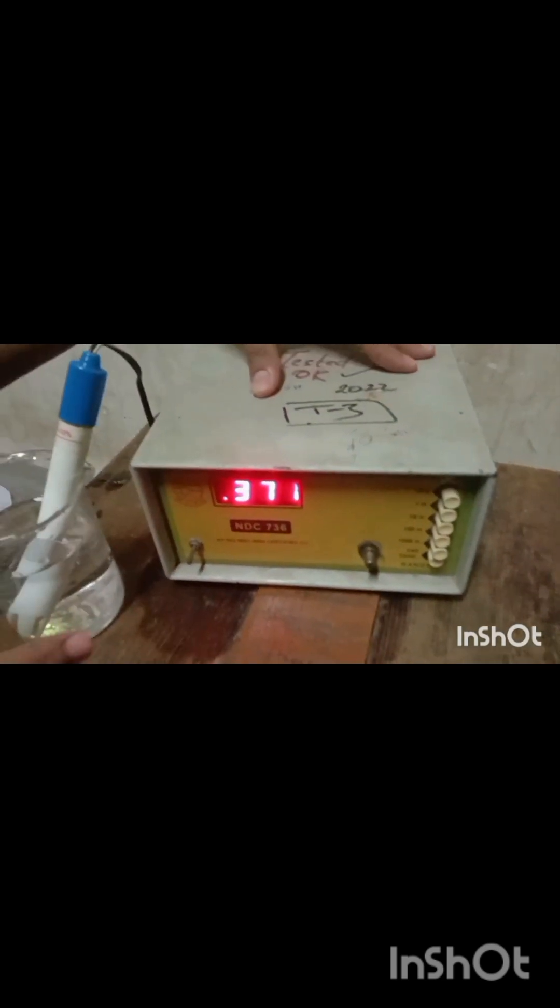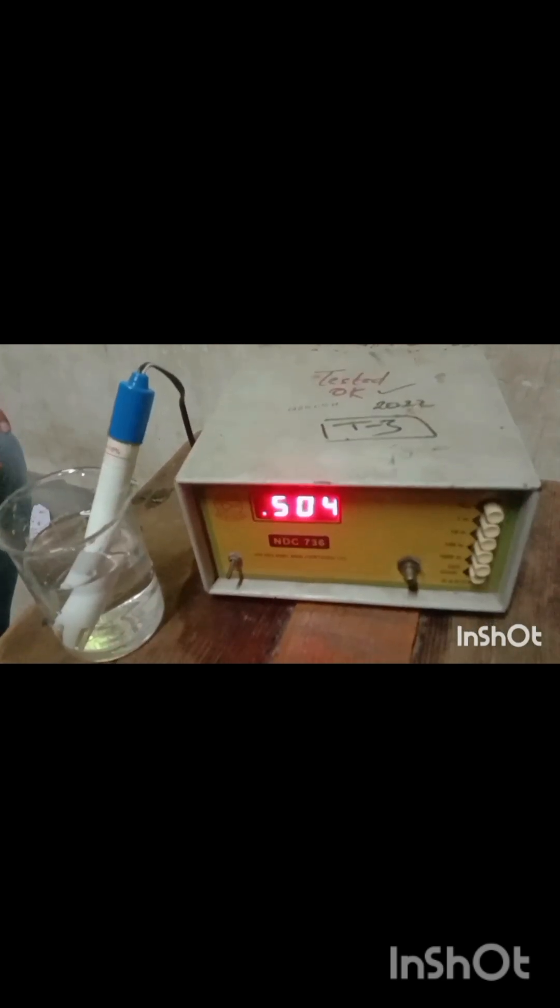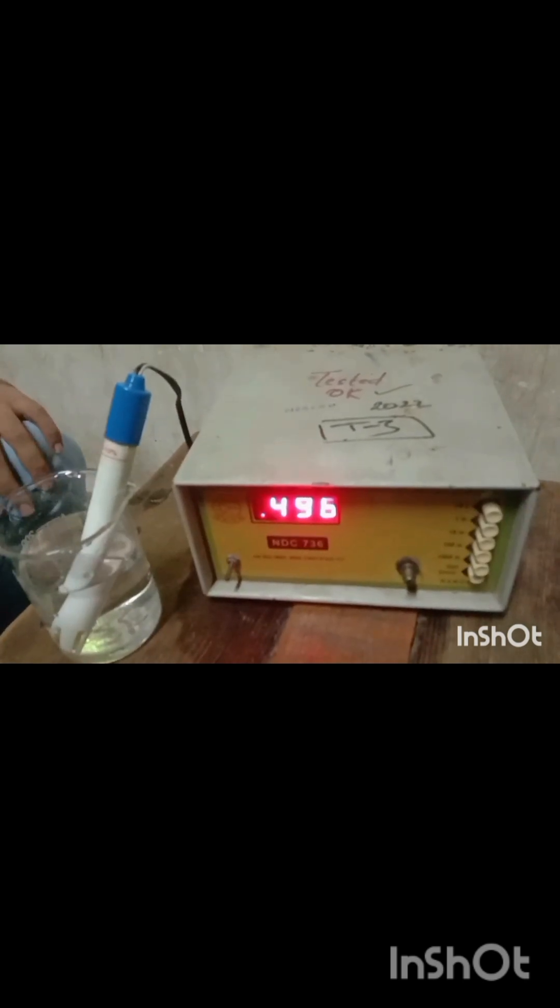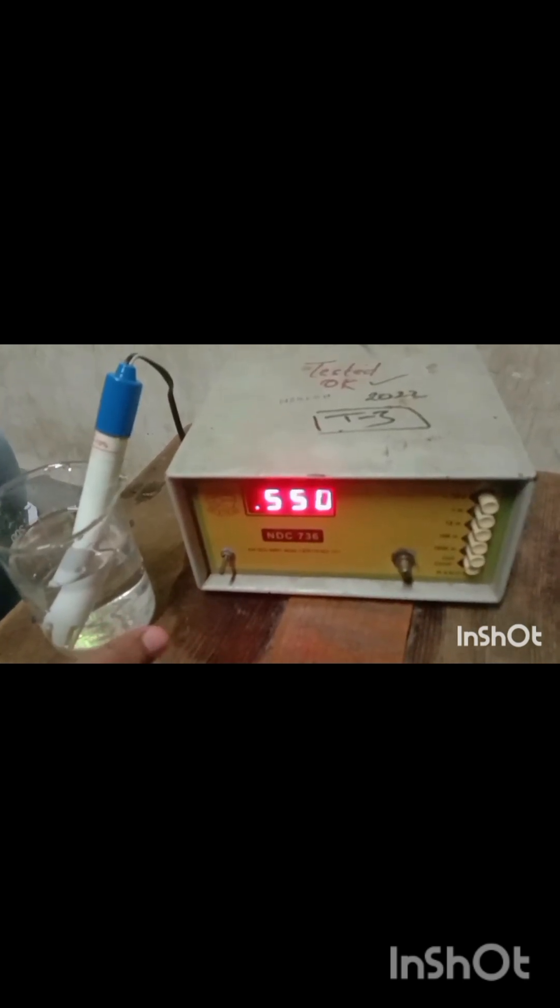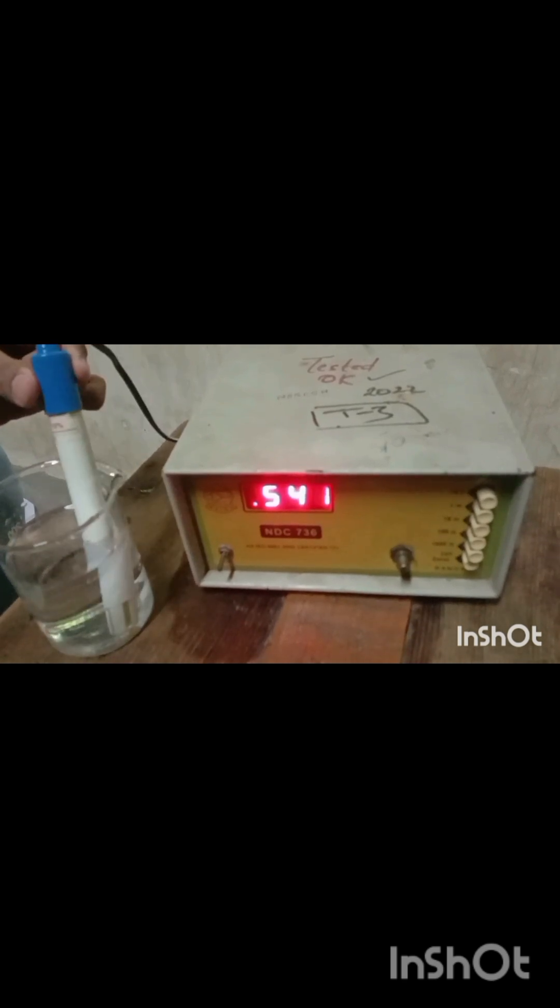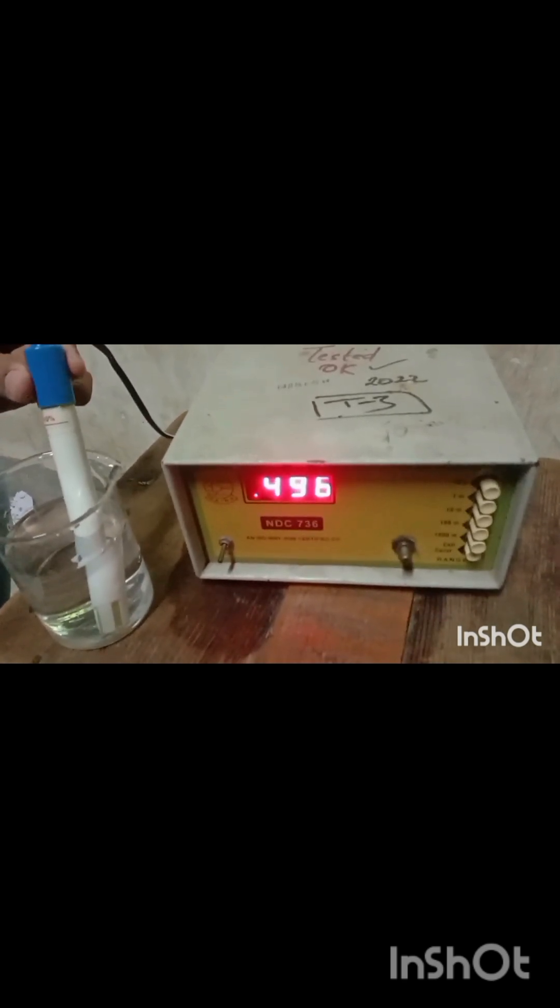Then we switch on the instrument, our conductometer. By dipping the conductivity cell in the 0.1 normal KCl solution prepared above, we note the reading displayed in the digital conductometer. The stable reading comes out to be 0.566.